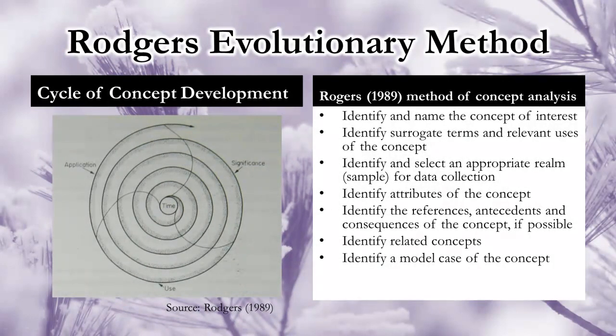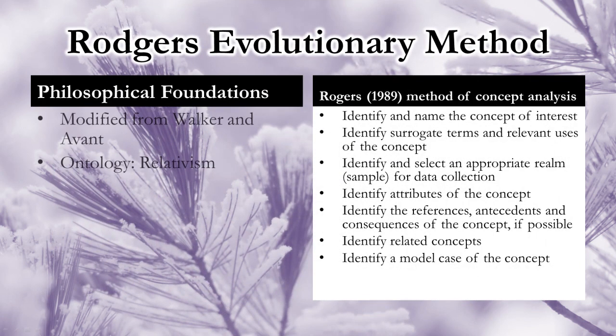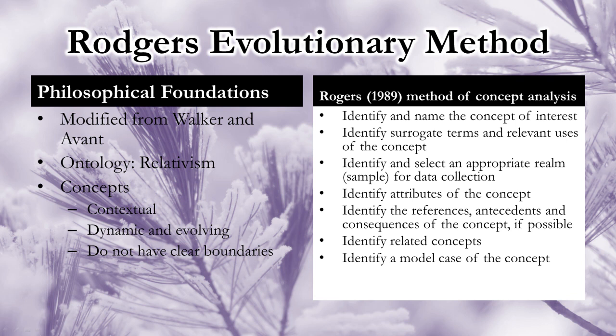Modified from Walker and Avant's approach, Rogers' evolutionary method is founded on relativism. Cyclical phases influenced by significance, use, and application of a concept are employed, and a model case is identified. Concepts are viewed within their context as dynamic and evolving phenomena without identifiable boundaries. Identified meanings change over time. In this approach, attention is given to methodological rigor and concepts are developed through inductive analysis.